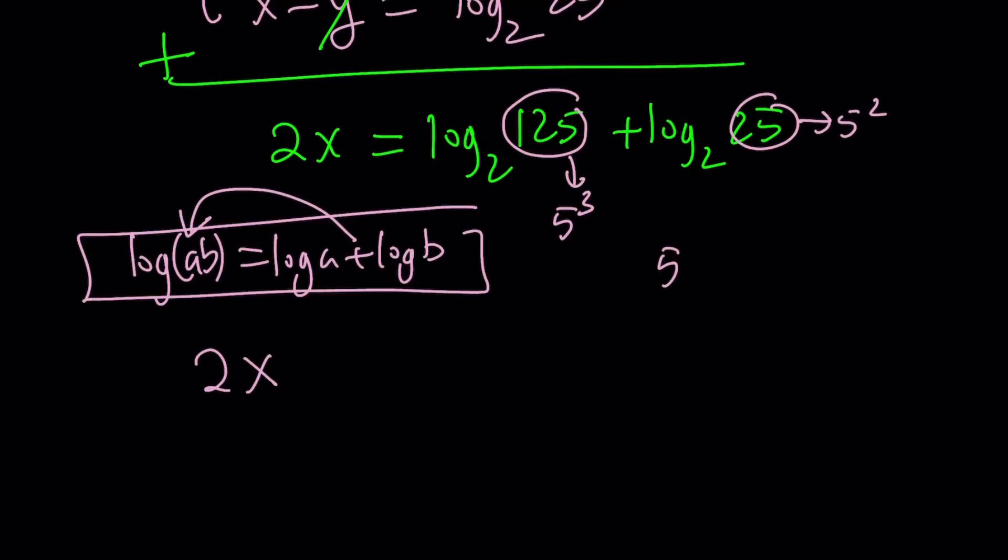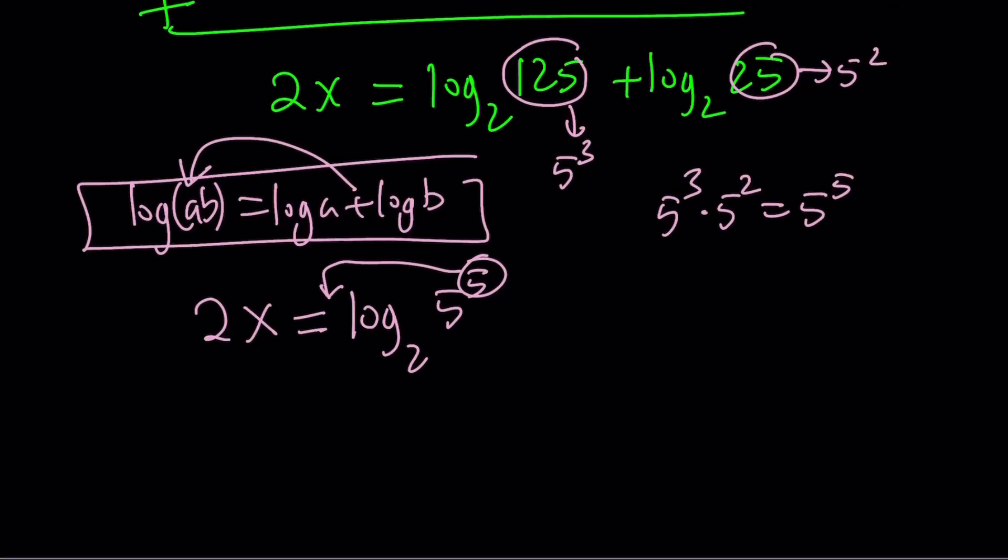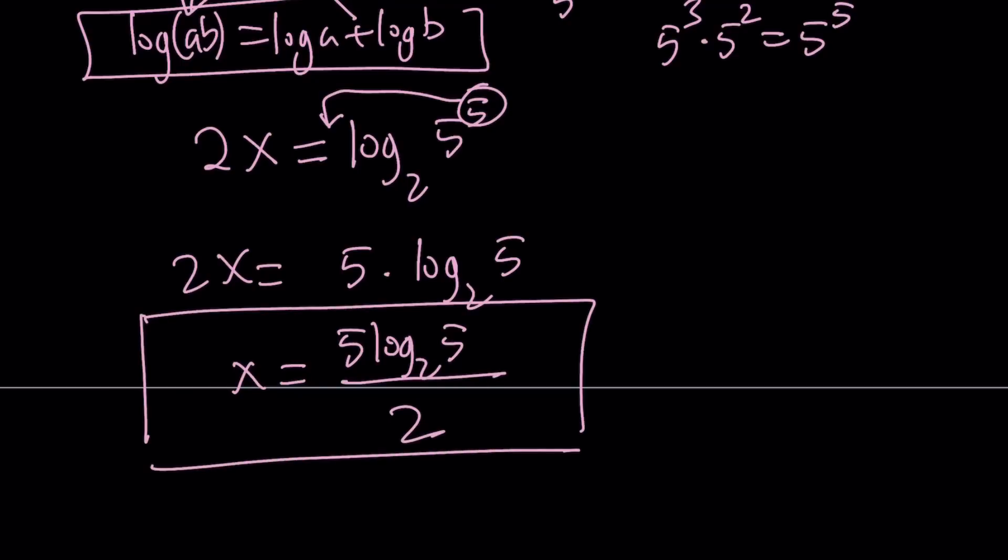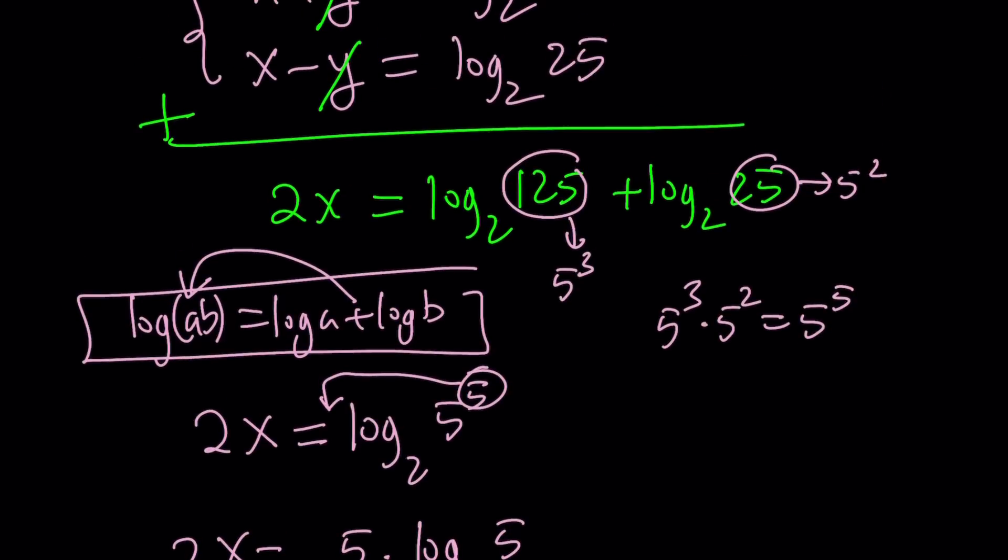Let's write this as 5 to the third and this as 5 to the second. When you multiply them, you get 5 to the fifth power. So 2x can be written as log 5 to the fifth power. You can move this 5 to the front. 2x equals 5 times log 5 with base 2. Now I can divide both sides by 2. x equals 5 times log 5 base 2 divided by 2.